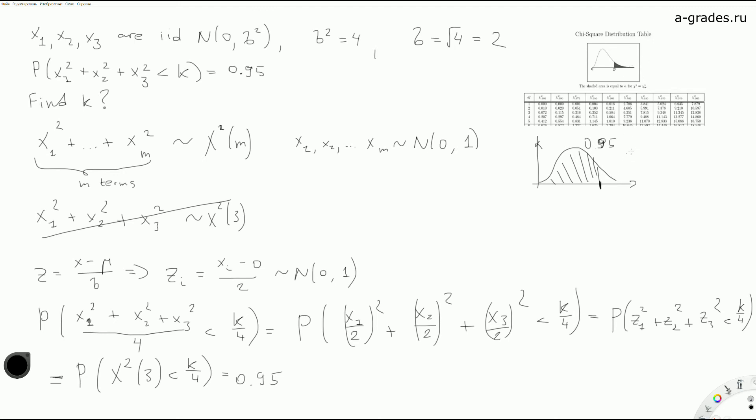And from this table we understand that if we have 95 percent to the left from this value, we have 5 percent to the right from this value. So we look in this column where alpha is this area. In this particular table, alpha is this area to the right, so 5 percent to the right, three degrees of freedom. We need this 7.815.